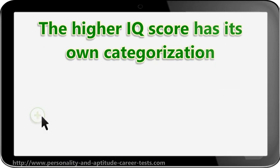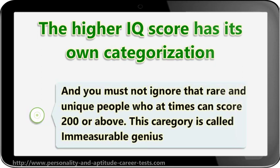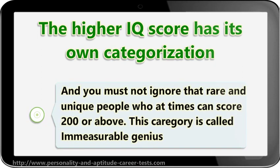And you must not ignore those rare and unique people who at times can score 200 or above. This category is called immeasurable genius.